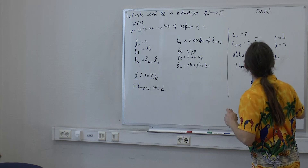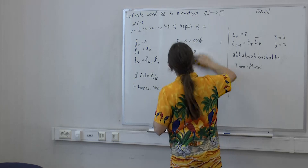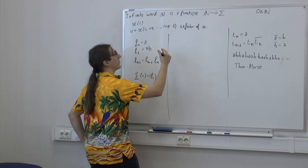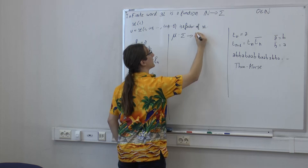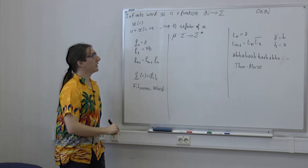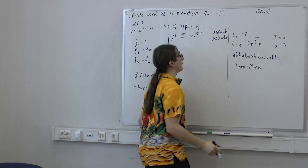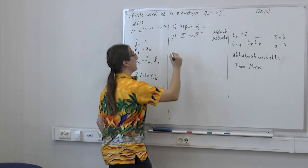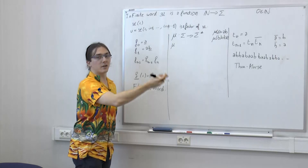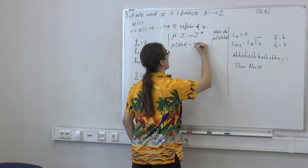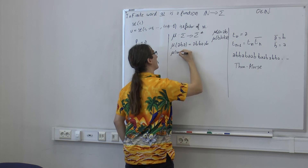First, I want to show you a useful tool called morphisms on words. If I have a function mu from sigma to sigma-star — so for each letter I give a word — typically something like mu(a) = ab, mu(b) = ba — I can extend this function to finite and infinite words. For example, mu(a·b·a) is evaluated by taking the image of each letter and concatenating: a, b, b, a, a, b. More formally, mu(w_0 ... w_{n-1}) = mu(w_0) · ... · mu(w_{n-1}).